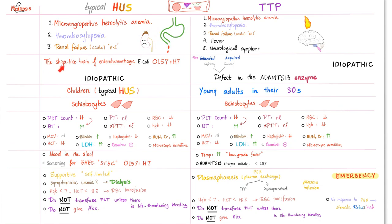The cause of typical HUS is Shiga-like toxin from EHEC. It is idiopathic in children. Blood in the stool is a unique feature. Screen for EHEC. Treatment: it is a self-limited disease, so provide supportive care with fluids and electrolytes. If there is uremia, go with dialysis. You can give RBCs if there is severe anemia. Do not give platelets. Do not give antibiotics.